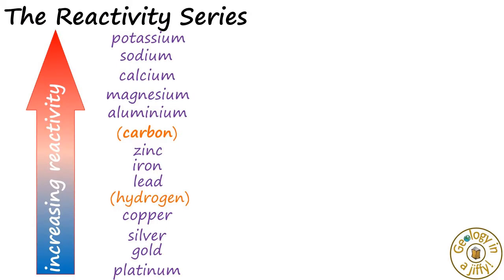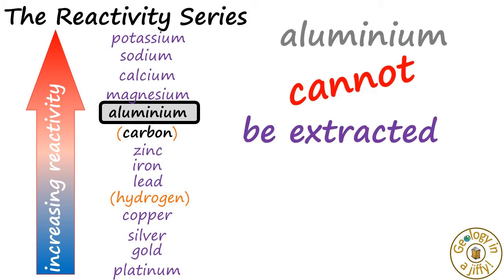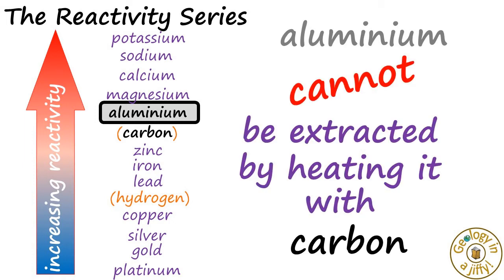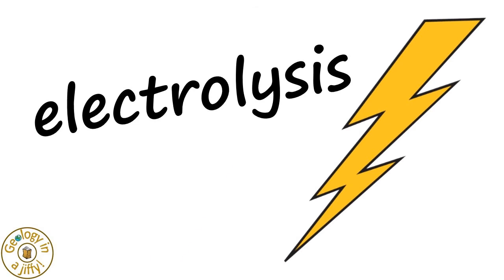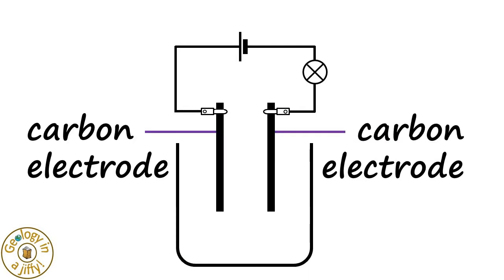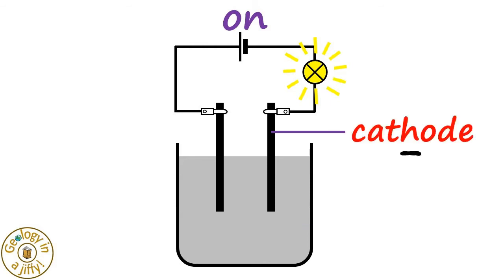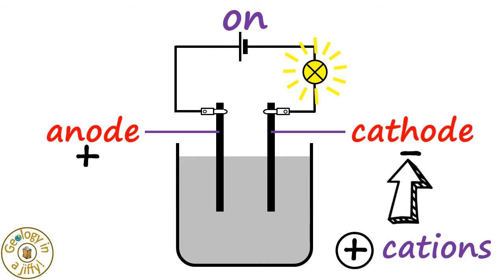In the reactivity series, aluminium is above carbon, which means that aluminium cannot be extracted by heating it with carbon, so we have to use the process of electrolysis instead. We know from our electrolysis video that using this apparatus with an electrolyte will allow an electrical current to flow, with the cathode attracting positively charged cations and the anode attracting negatively charged anions.